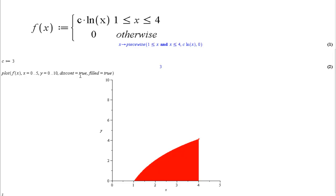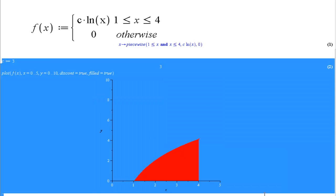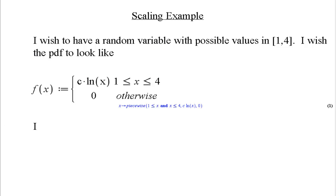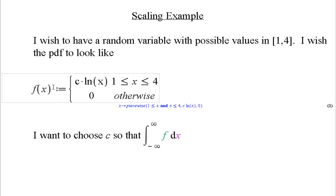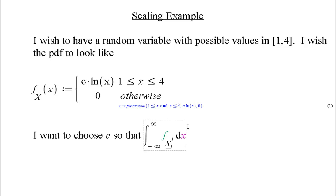I want to choose my constant c so that my PDF indeed integrates to 1, the integral from negative infinity to infinity of f sub x of x dx equals 1.